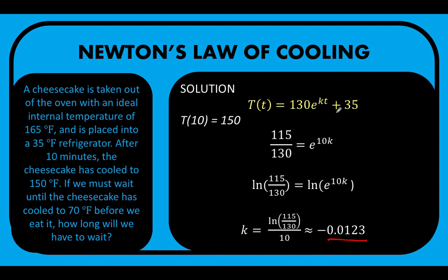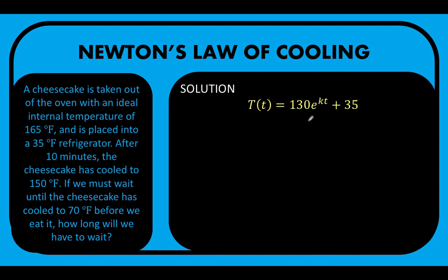This is now our value of k that we can substitute to the formula. So from this formula, replacing now k by the value that we just arrived at, negative 0.0123, we now have this formula.